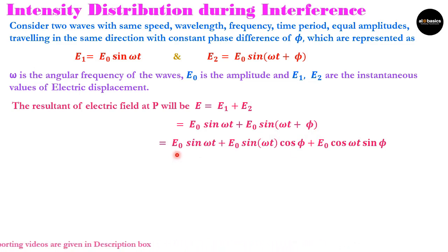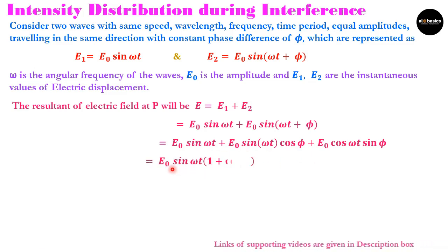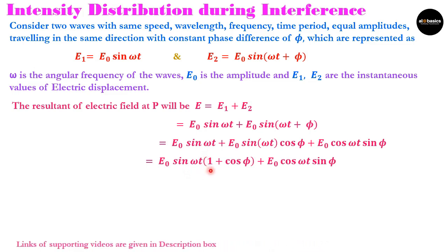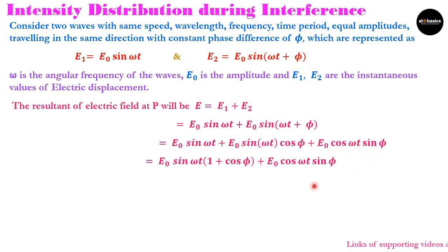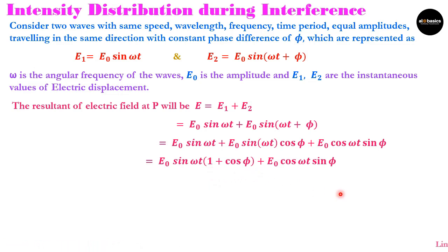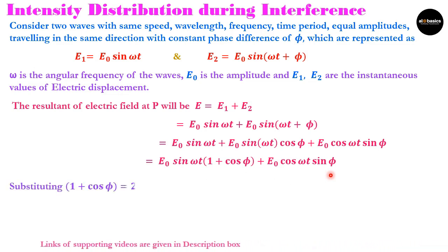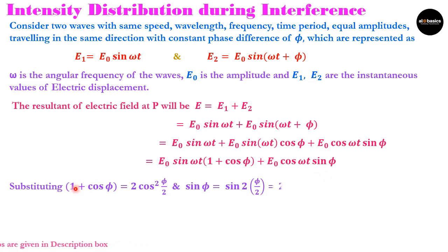Simplifying further, E0 sin(ωt) is common in the first two terms, so we write it as E0 sin(ωt)(1 + cos φ) + E0 cos(ωt) sin φ. We then substitute using trigonometric identities: 1 + cos φ = 2cos²(φ/2) and sin φ = 2sin(φ/2)cos(φ/2).